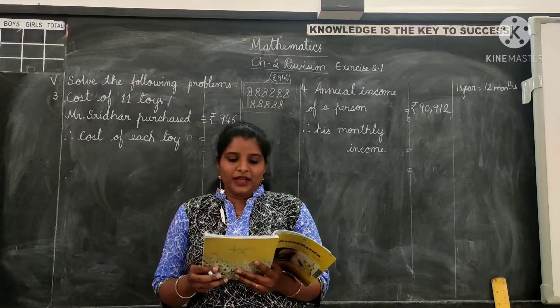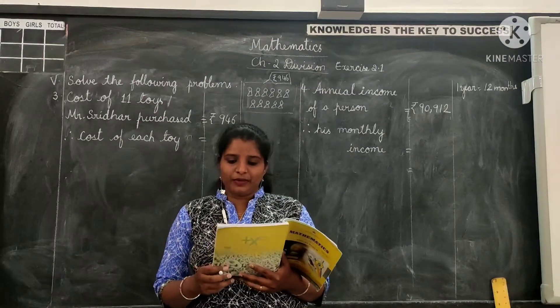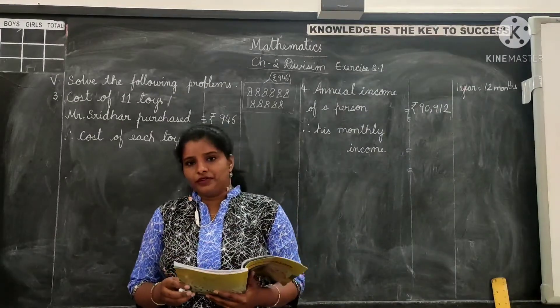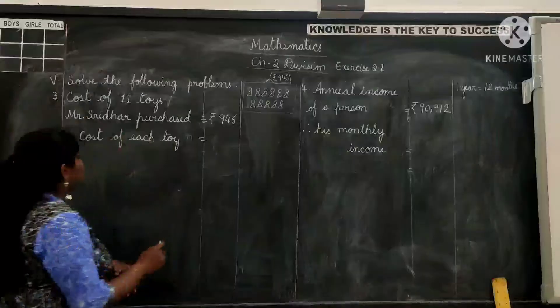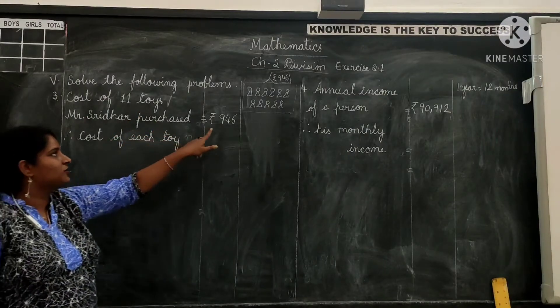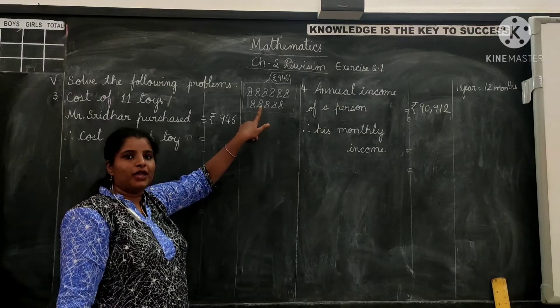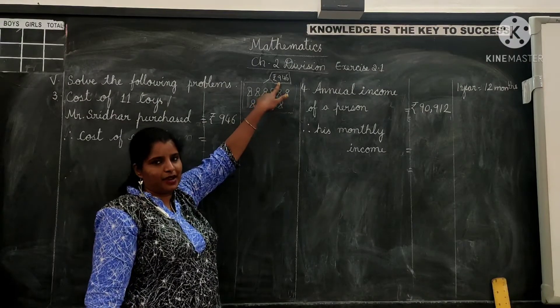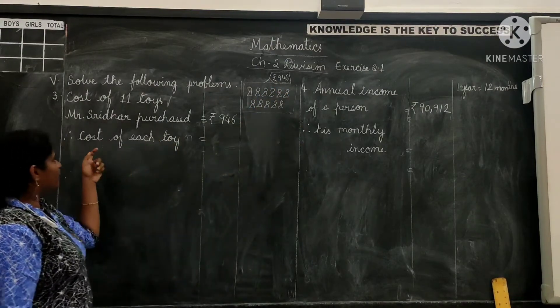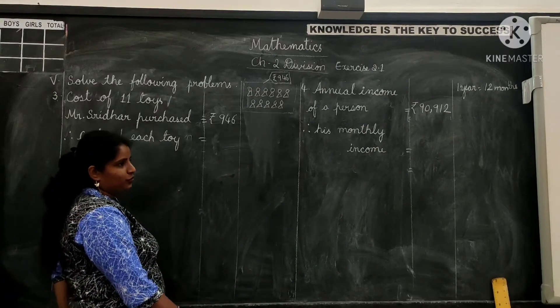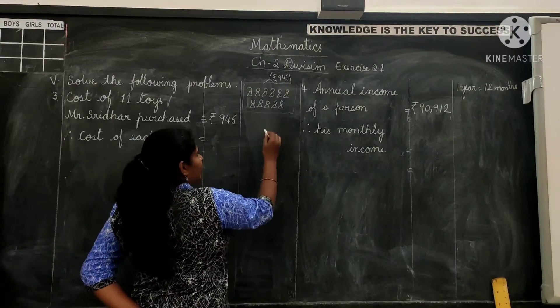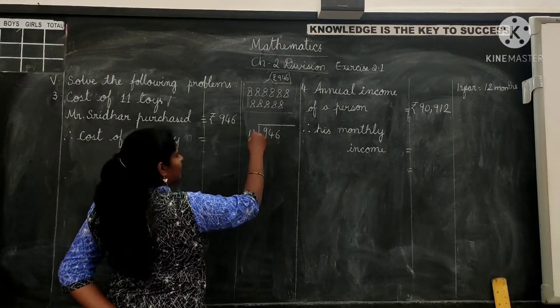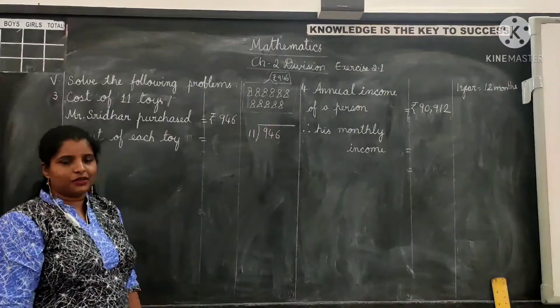Let us solve the third problem. Mr. Stephen purchased 11 toys of same price for rupees 946 from a toy shop. Find the cost of each toy. So let us see the statements. Cost of 11 toys, Mr. Stephen purchased rupees 946. So he went to a shop, he purchased 11 toys. For all the 11 toys, the price is 946 rupees. So we are supposed to find the cost of each toy. So here we are going to divide 946 by 11 toys.